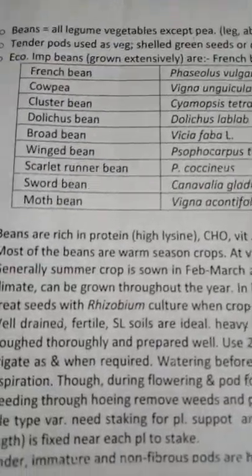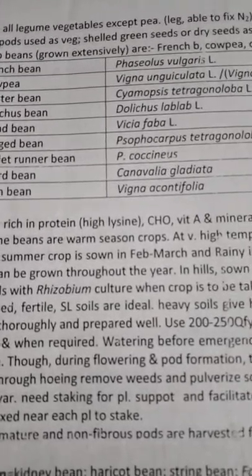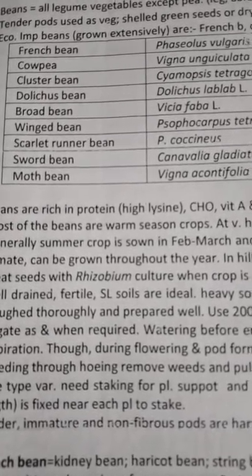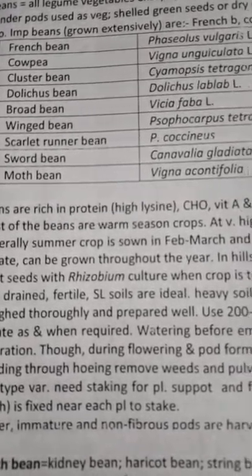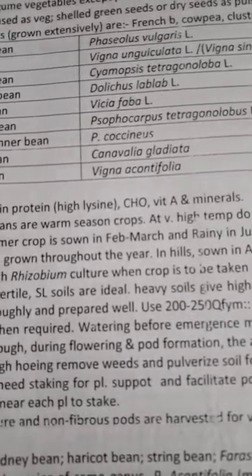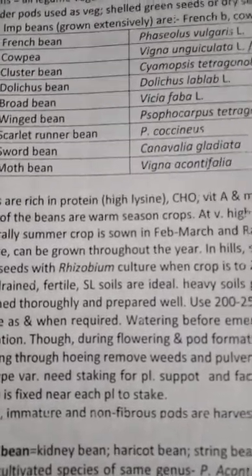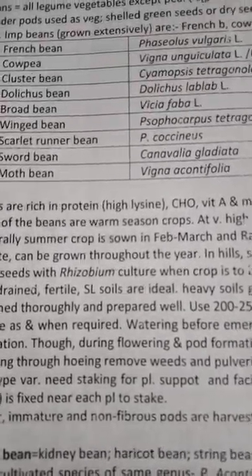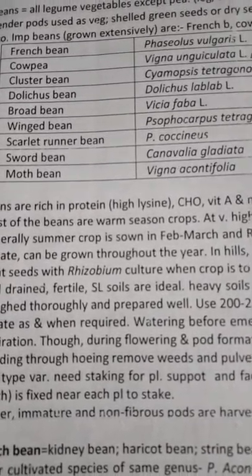These beans are very important. French bean is Phaseolus vulgaris. Cow pea is Vigna unguiculata. Cluster bean is Cyamopsis tetragonoloba — it is used for making guar gum. Broad bean is Vicia faba. Winged bean is Psophocarpus tetragonalobus. Scarlet runner bean is Psophocarpus coccineus. Sword bean is Canavalia gladiata. Moth bean is Vigna aconitifolia. These beans are often asked in the JRF exam.